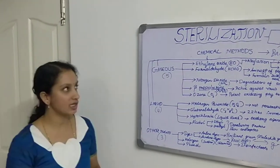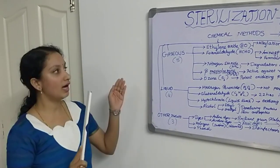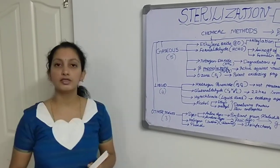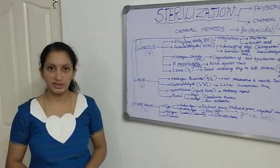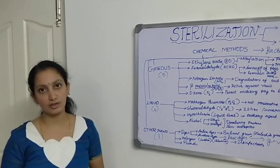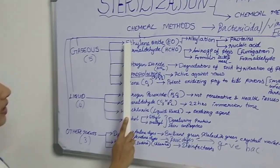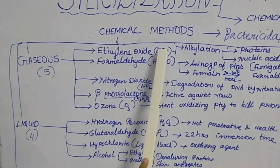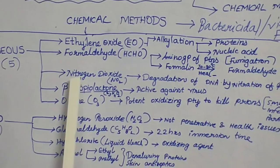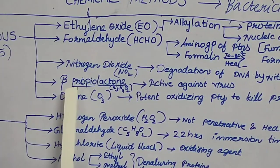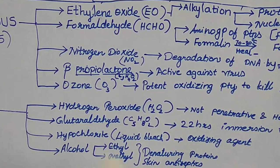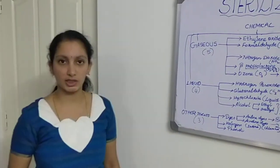In gaseous chemical sterilization, gas is supplied through an orifice to the object which has to be sterilized. The high concentration of gas passes to the object, which removes or kills the microorganisms. There are five gaseous agents: first, ethylene oxide (EO); second, formaldehyde (HCHO); third, nitrogen dioxide (NO₂); fourth, beta-propiolactone (C₃H₄O₂); and fifth, ozone (O₃).